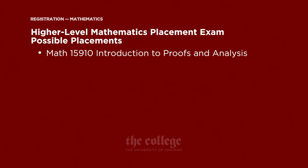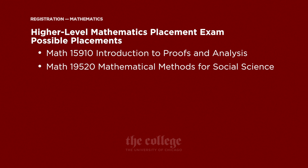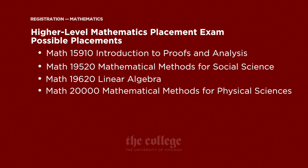It also makes sense for students with some higher level mathematics training who hope to place beyond the calculus level. These placements include things like math 159 introduction to proofs and analysis, math 195 mathematical methods for the social sciences, math 196 linear algebra, math 200 mathematical methods for the physical sciences, and math 203 analysis in R^N. Math 159 is an introductory course in proofs and analysis that leads to upper level mathematics courses. Math 195 and math 200 are multivariable calculus courses for students going into some of the social sciences or physical sciences respectively.